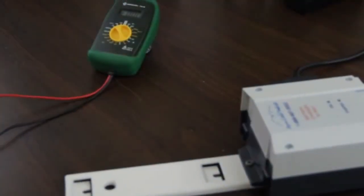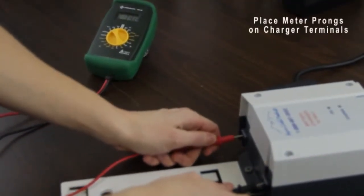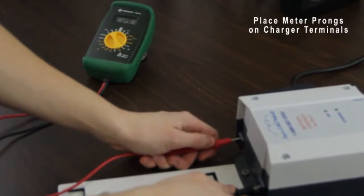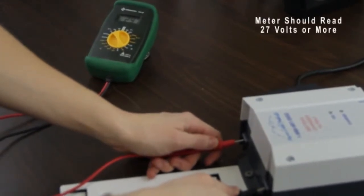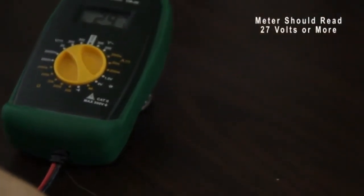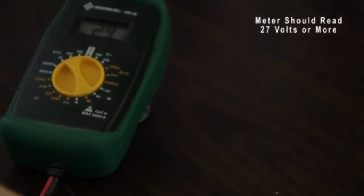Start by checking the voltage on your battery and charger. To check the charger, make sure the charger is plugged in. Using your voltmeter, place the prongs on the charger terminals. A good charger will read around 27 volts or more. If your charger reads below 27 volts, it needs to be replaced.